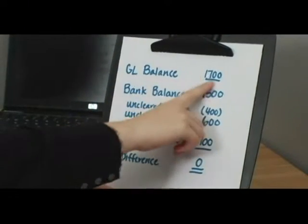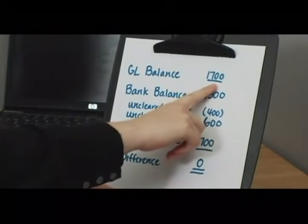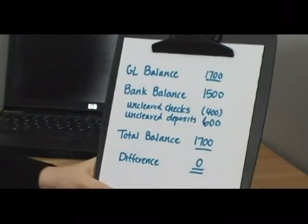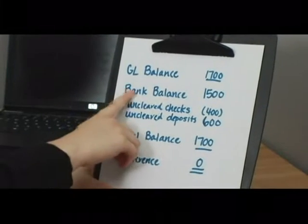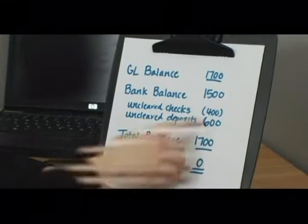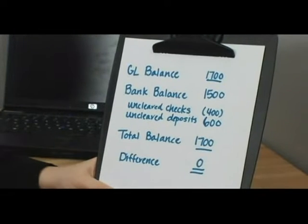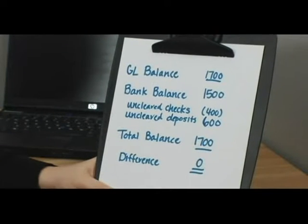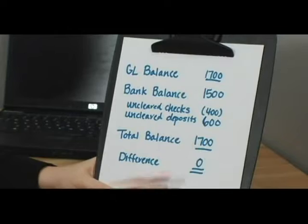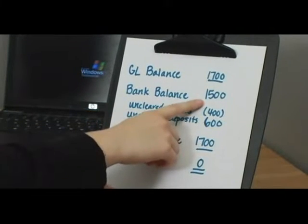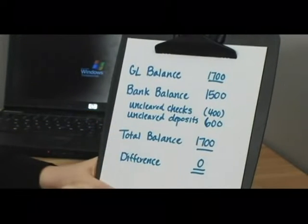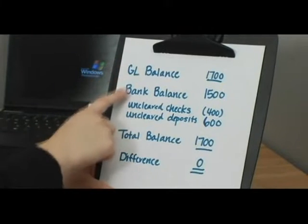Up top we have our general ledger balance, and that simply means how much money do we think we have in the bank. Next we have the bank balance, and that's per the statement we received from the bank. In order to get from what our balance is versus what the bank balance is, we have to think about the things that are different between those two items.